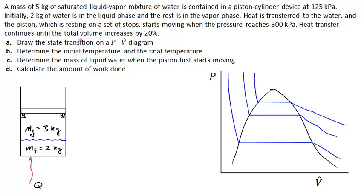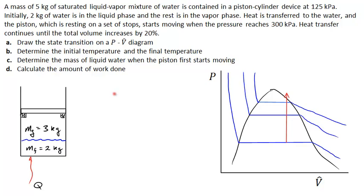We want to draw the state transition on this PV diagram. Two things occur: first, heating under constant volume before the piston is able to rise, and second, heating at constant pressure. At constant volume the state transition can only move vertically; at constant pressure it can only move horizontally. We need to determine whether the water boiled completely into steam before the piston started moving — and it turns out that it will. Once the pressure is great enough the lid lifts and we continue at constant pressure to a greater specific volume.